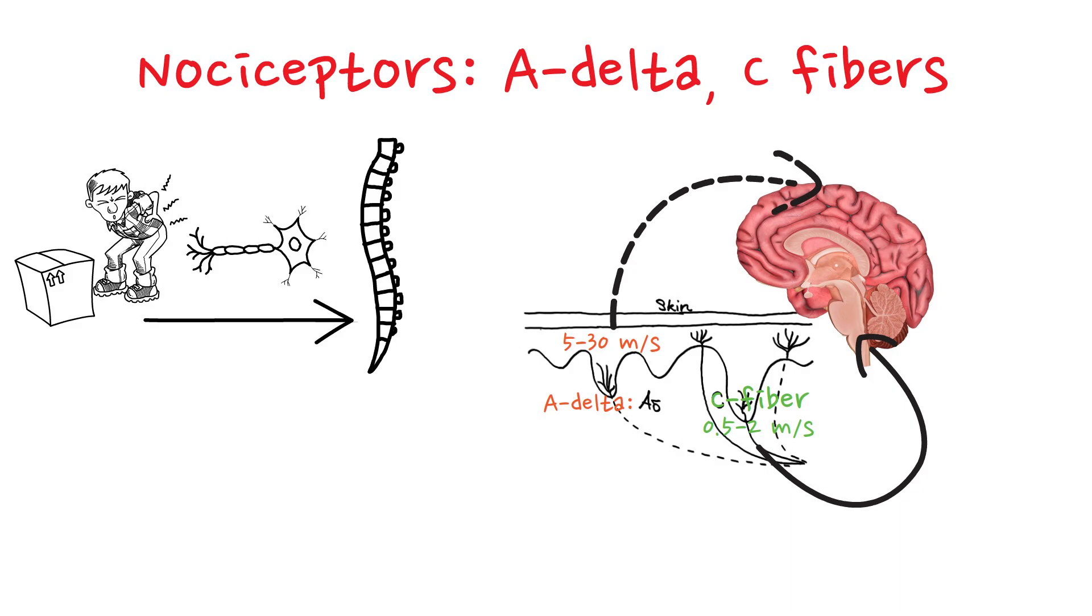This type of pain is what you might experience after the initial sharp pain subsides, such as the lingering ache after burning your hand. The signals transmitted by C fibers are also associated with chronic pain conditions, where the pain persists over a longer period.